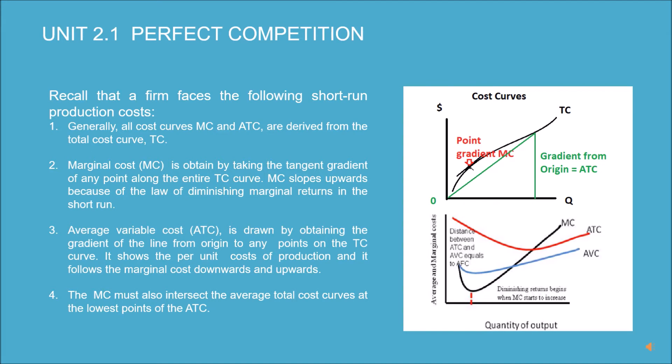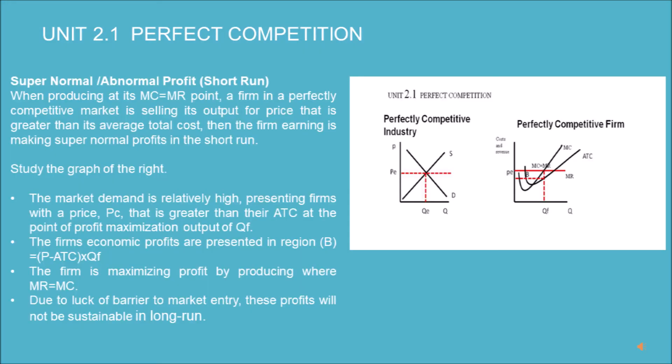The ATC follows the marginal cost downwards and then upwards. The MC must also intersect the average total cost curve at the lowest point of the ATC. When producing at its MC equals MR point, a firm in a perfectly competitive market selling its output at a price greater than its average total cost is making supernormal profits in the short run.